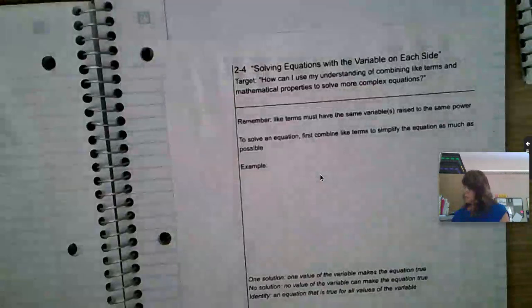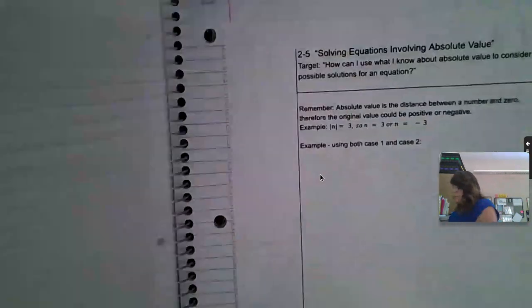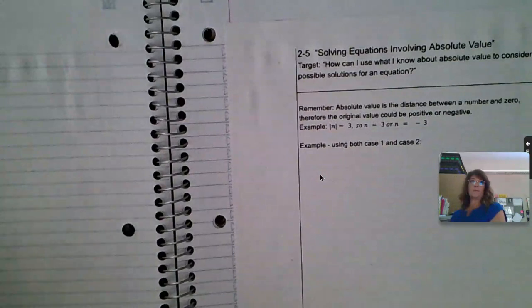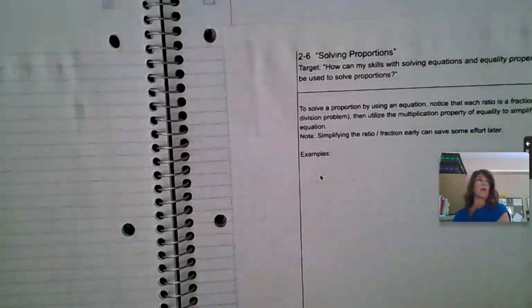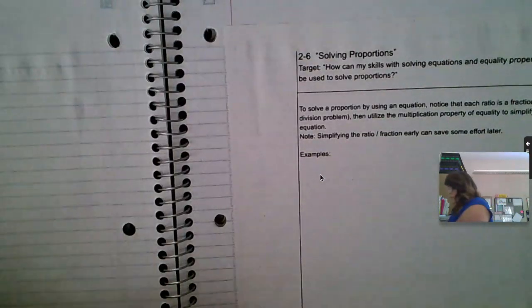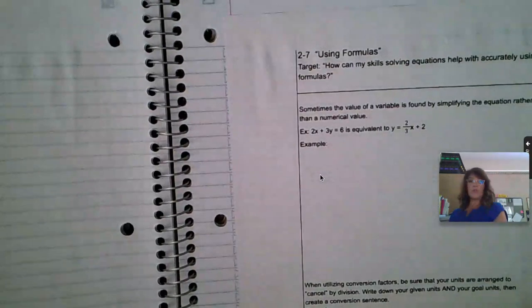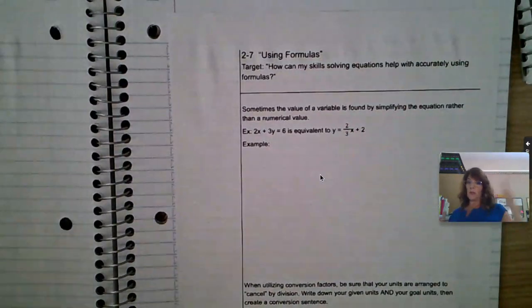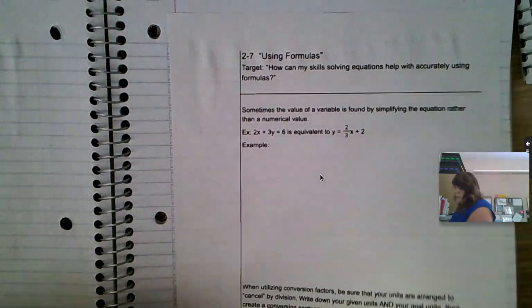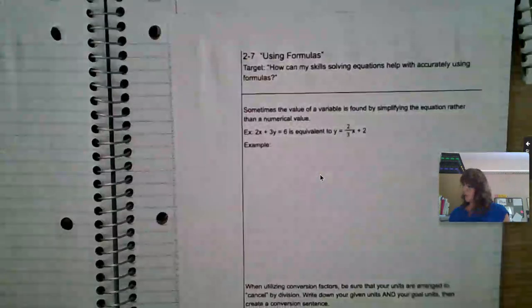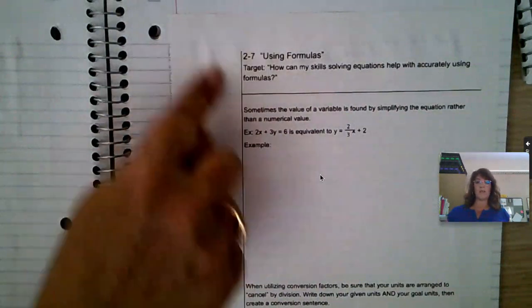Two dash three, blank page, two dash four, blank page, two dash five, two dash six, two dash seven. This is a longer unit. And then we're at blank again. We'll use that for the next module. So two dash seven is your last one.